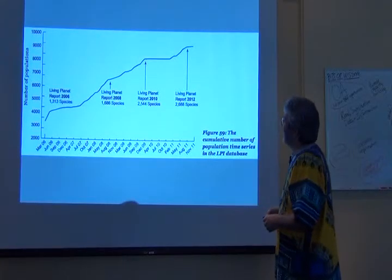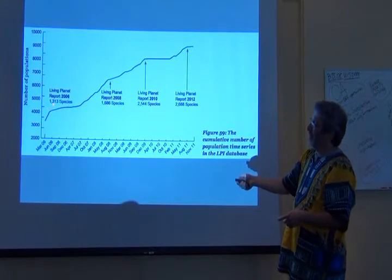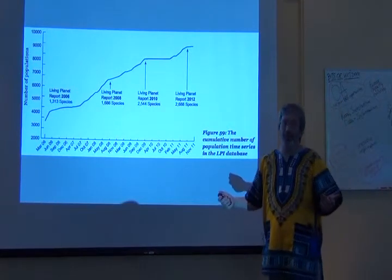We can break it up by realms: the Arctic, the Palearctic, the Neotropical, and the Afrotropical. Those of us in the north are being good and those in the south are not — look at the Neotropics, what a mess. Also look at the number of species involved: the first report started with 1,300 species, and the most recent report has doubled that.